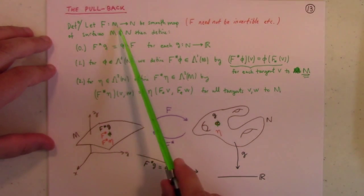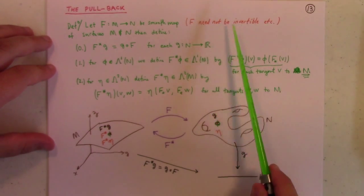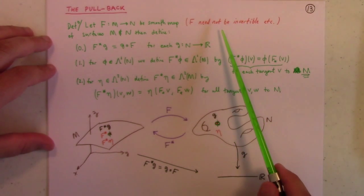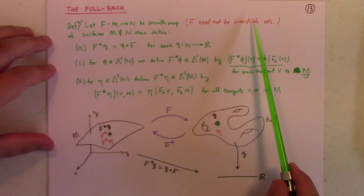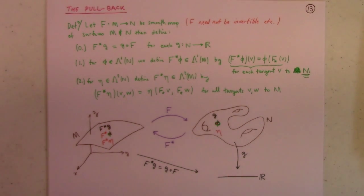Now, pullback we can define for a smooth map. As I mentioned, we don't really need anything particularly to be true about the map. We don't need injectivity. We don't even need regularity. I mean, you could define the pullback for the zero map if you wanted. It would be kind of boring. You'd just pull back everything to zero, so that wouldn't be too exciting.